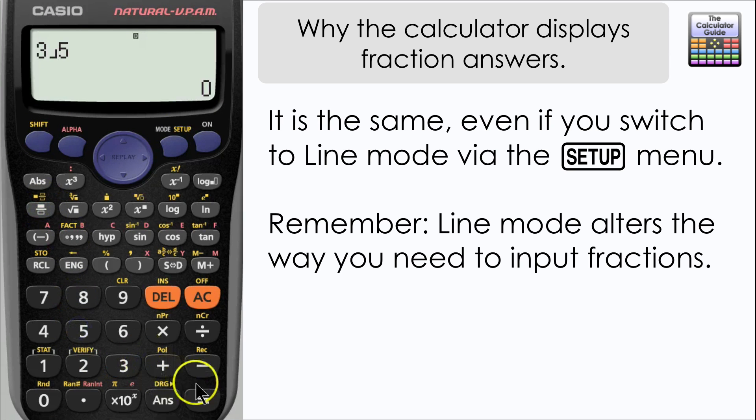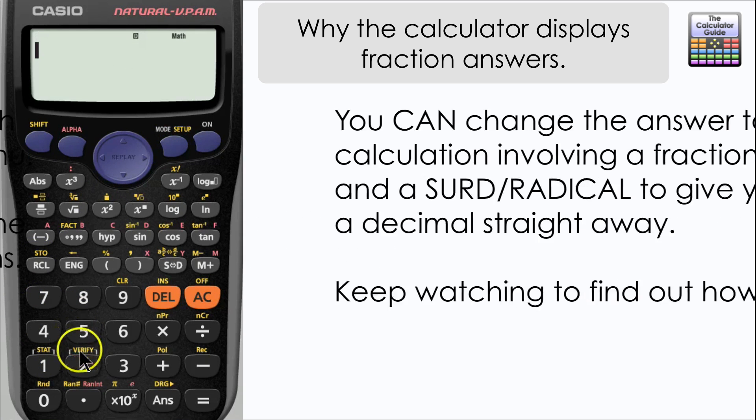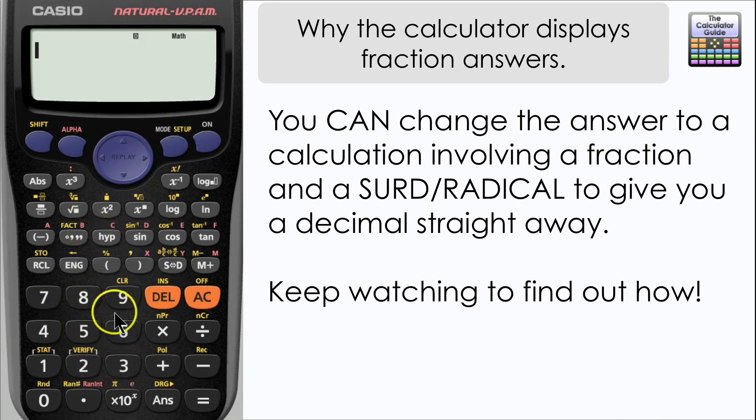Even if you change to line mode as I'm doing now, you still get the fraction answer in the first instance. There is a reason why the calculator does this, and I'm best off demonstrating this with a calculation. I'll switch back to math input and output and do the calculation of square root 2 over 2 multiplied by one third.